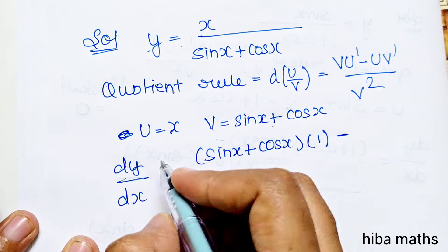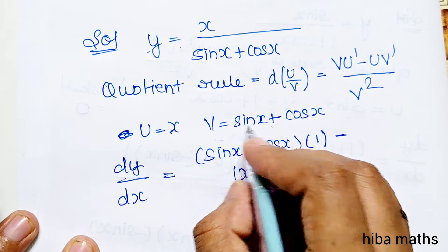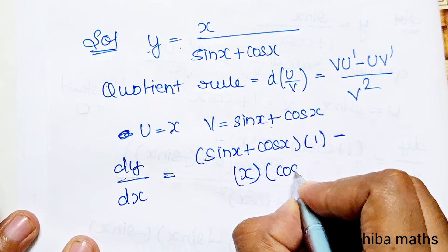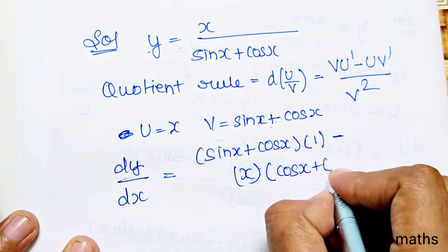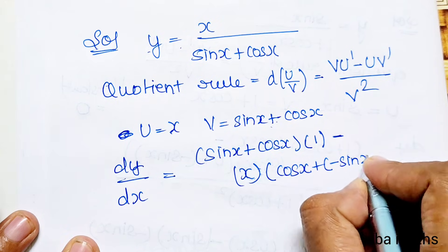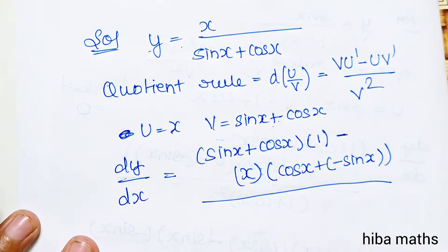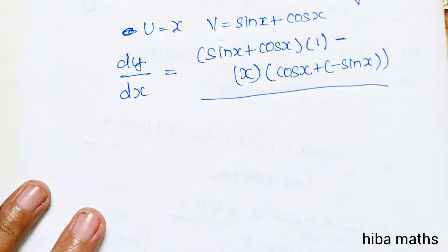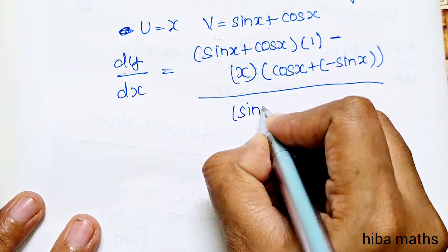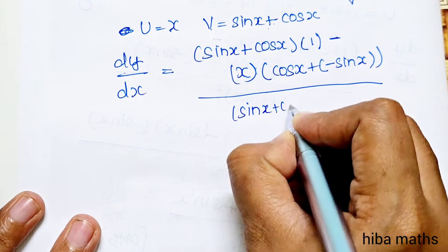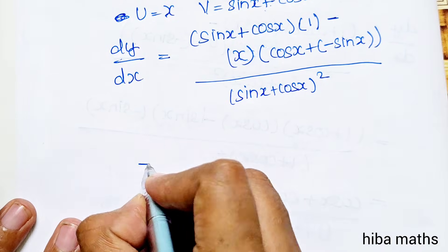Now u is equal to x. For v', differentiating sin x gives cos x, plus differentiating cos x gives minus sin x. There is a minus sign here. Divided by v square, that is (sin x plus cos x) whole square. Next line: